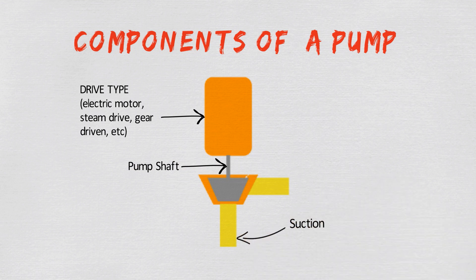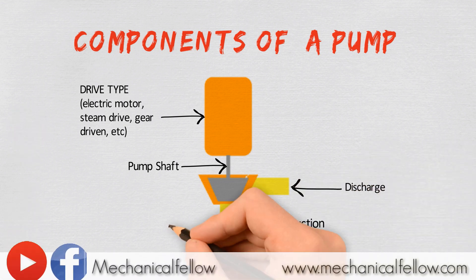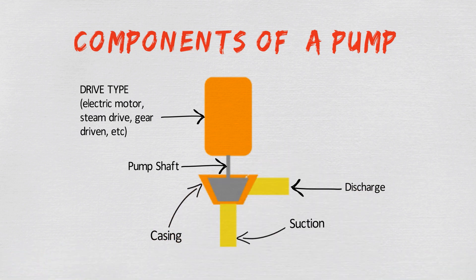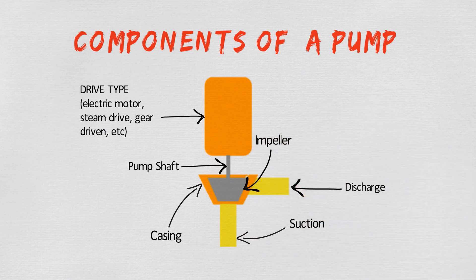This is the suction line or inlet line. This is the discharge line. This is the casing, and this is the impeller. We will talk about the classification of pumps in the next lecture. Stay blessed, thank you.